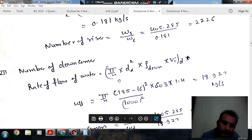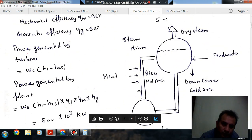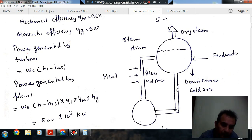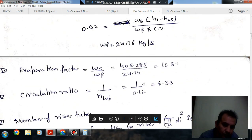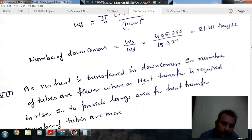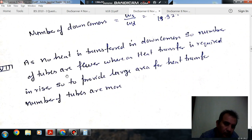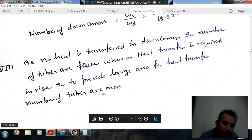And number of downcomers are 22 and number of risers are 2246. This is the riser and this is your downcomer. In riser we have to transfer heat so the area of the riser should be more as compared to downcomers. Whereas in downcomers we have to transfer water so there is no need to increase the surface area. So for transferring heat the number of risers should be more to provide more surface area. As no heat transfer in downcomers, number of tubes are fewer here. So heat transfer is required in large area so number of tubes should be more.